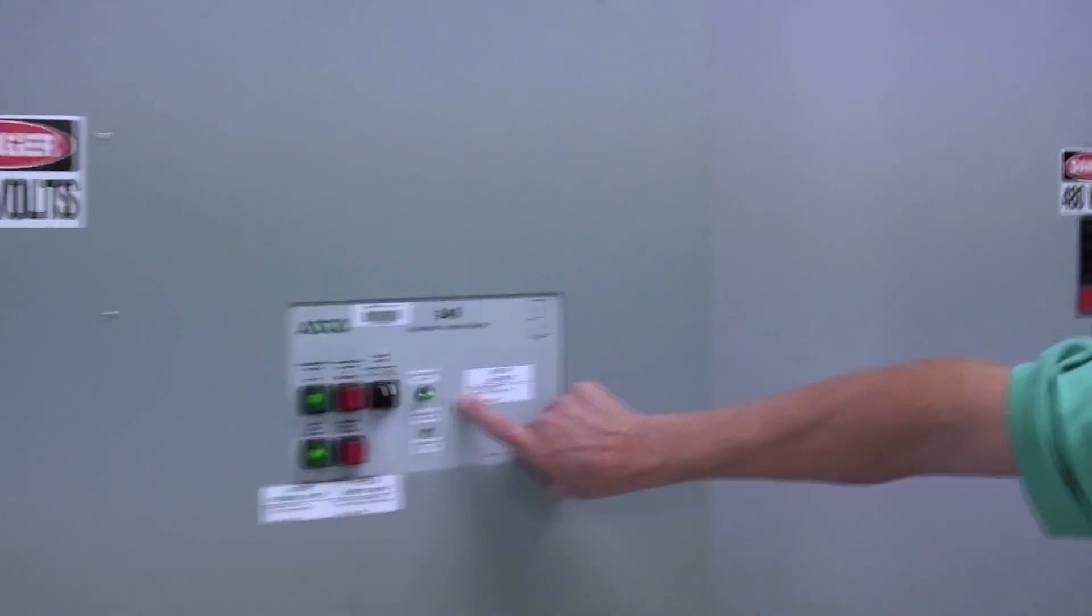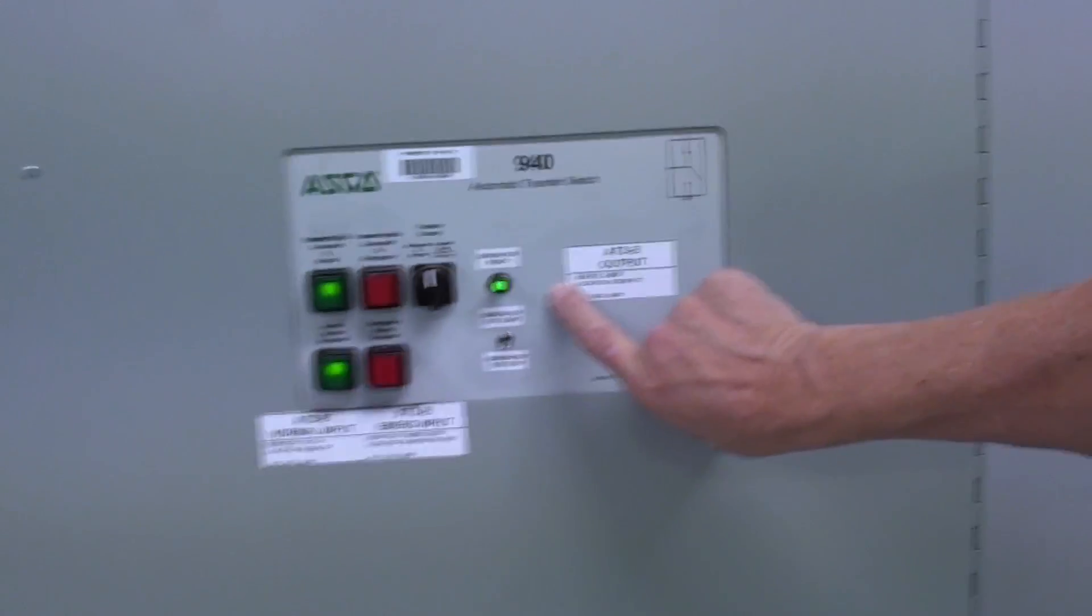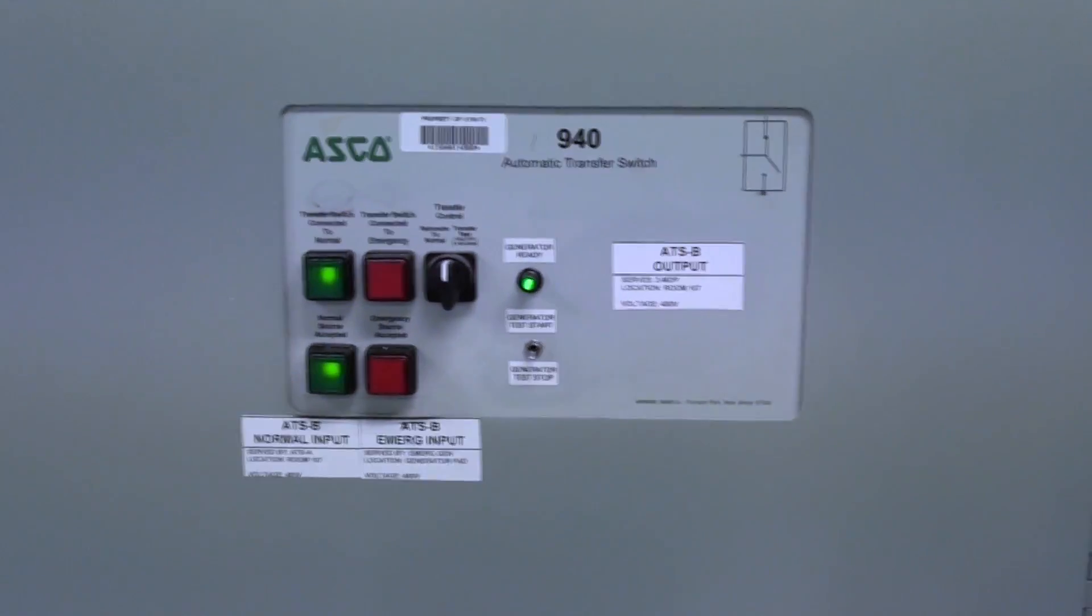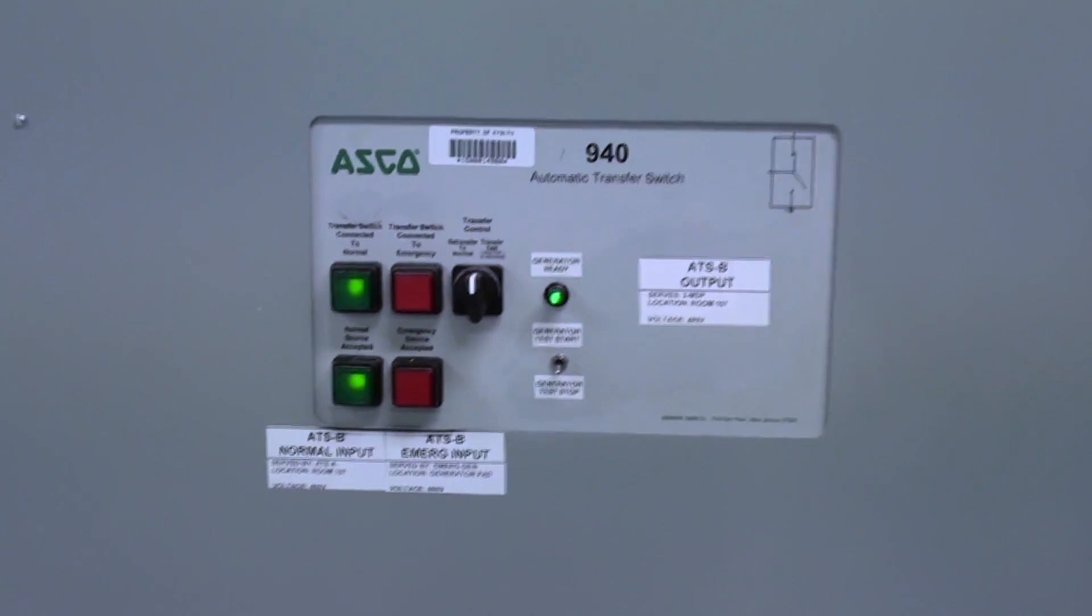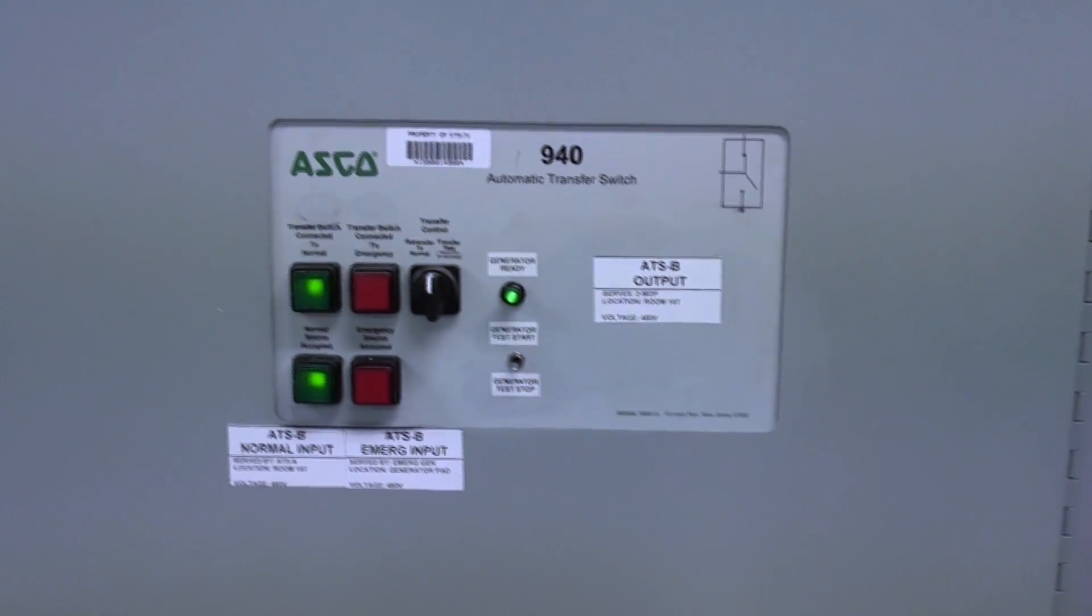Basically I have a switch that starts the generator, waits for the generator to make power and frequency, and switches to it. We have enough fuel here to run about 80 hours, which is about three and a third days.